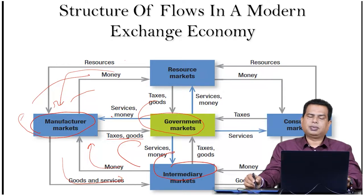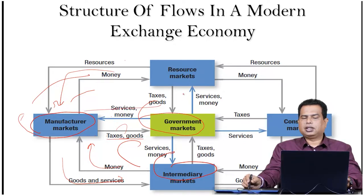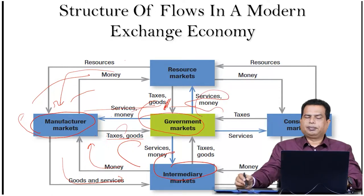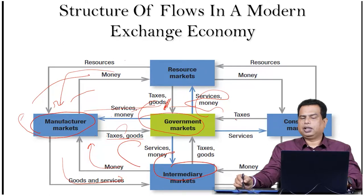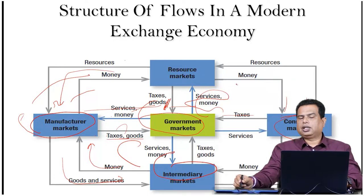The market is going to provide taxes and goods to the government, and the government is going to provide them services as well as money in lieu of those goods and taxes. The government is also linked to the resource markets — giving them goods and services and taxes — and the government provides services and money in return. These government markets are also linked with the consumer markets, which provide the resource markets with labor.